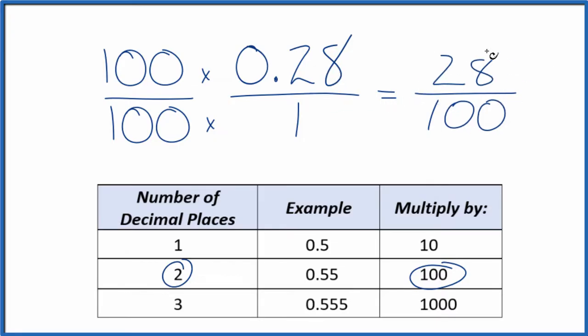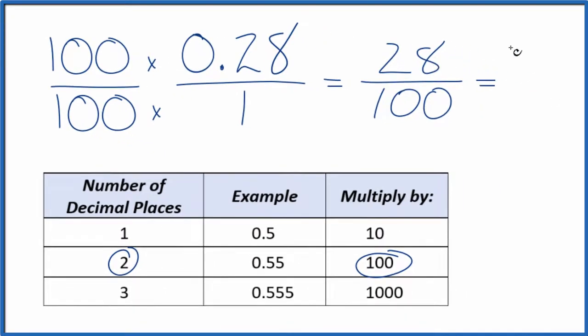But we can simplify this even further. I know that 4 goes into 28 seven times. 4 times 7 is 28. So we could say 7 for the numerator, and then divide 100 by 4, which is 25. So we can simplify 28 over 100 down to 7 over 25.